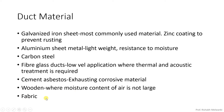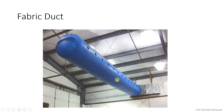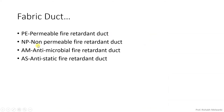We will also see fabric duct, which has been shown. If you visit Thakur Mall in Dahisar, you will be able to see this fabric duct — it is there on the top side. There are different types of fabric duct: permeable fire retardant duct, non-permeable fire retardant duct, anti-microbial fire retardant duct, and anti-static fire retardant duct.